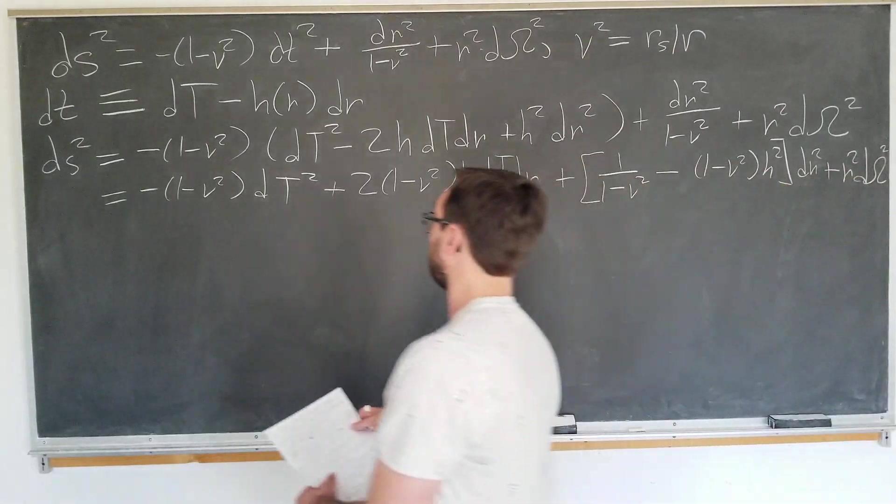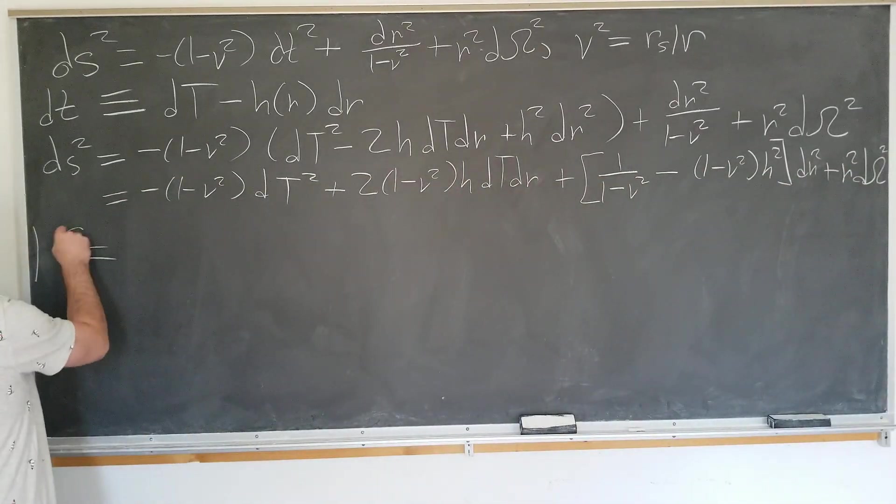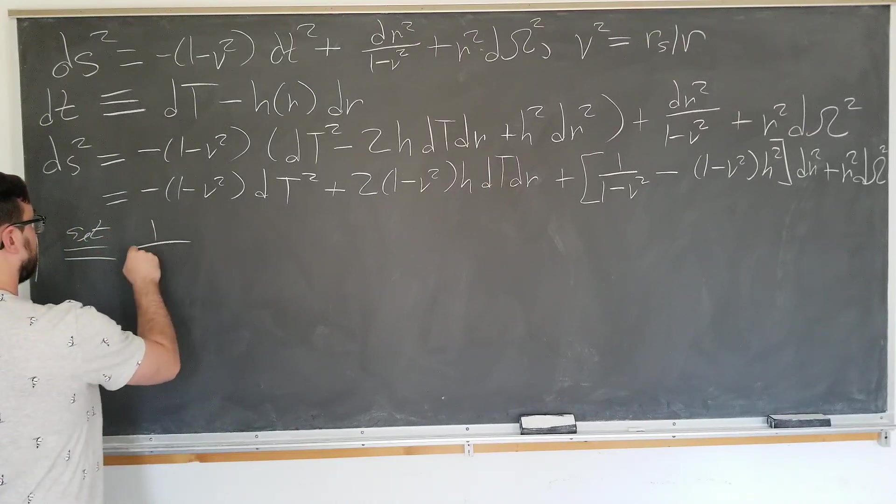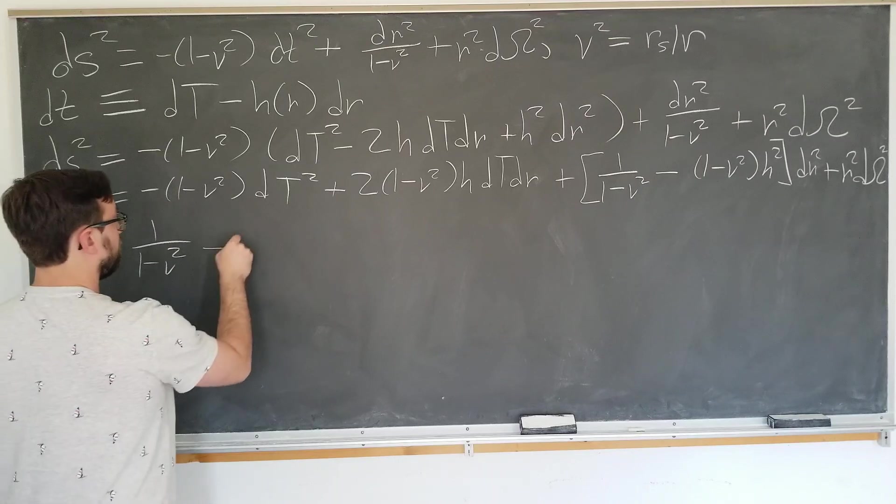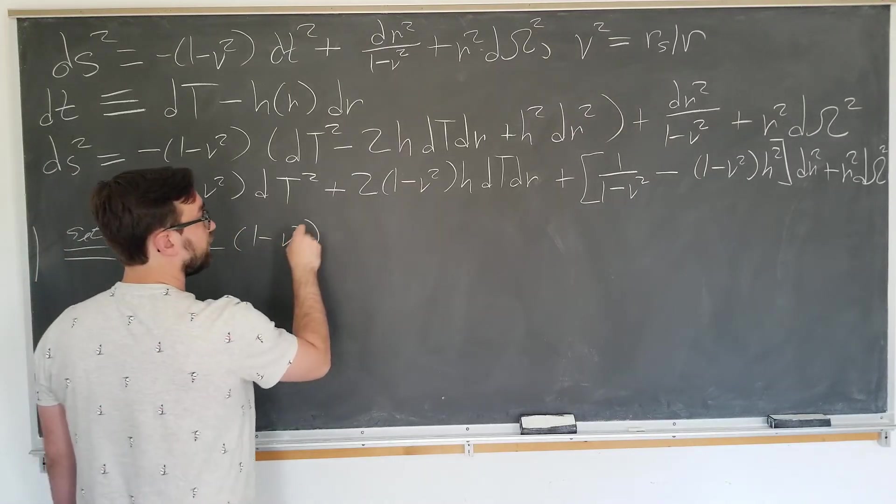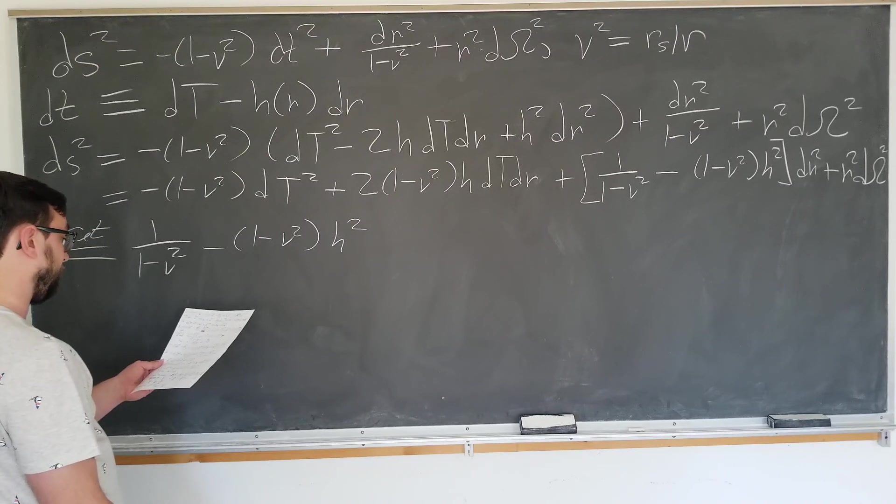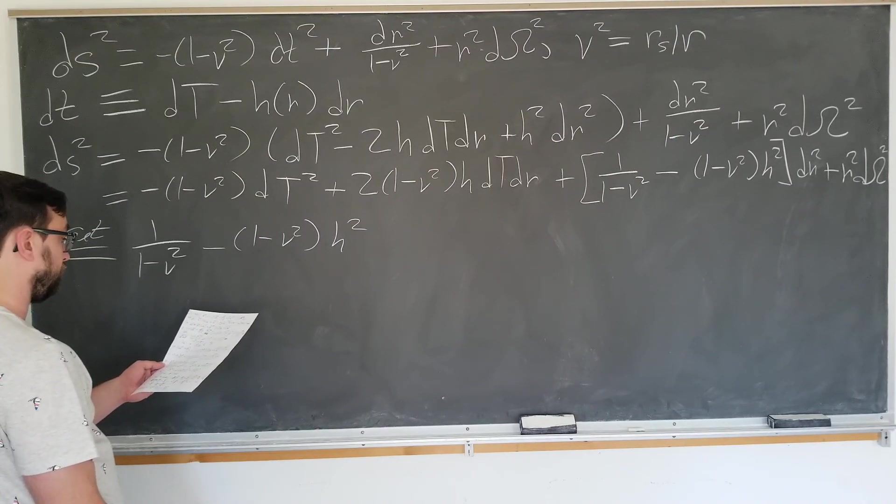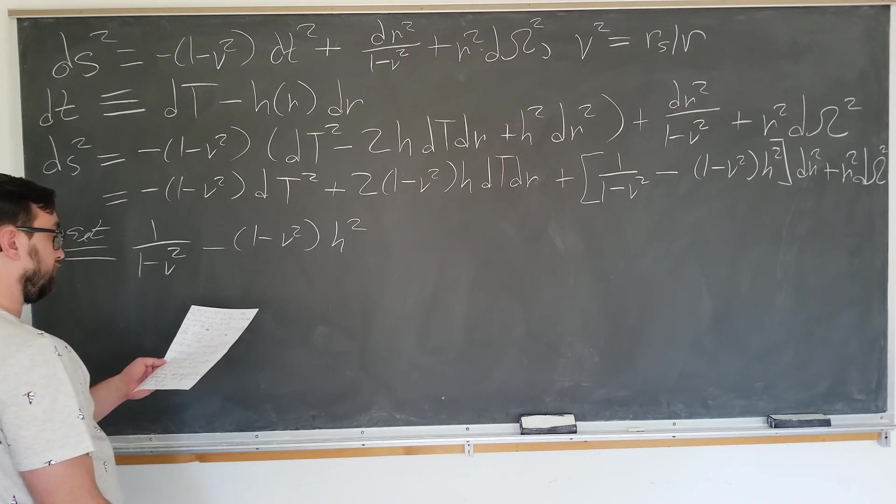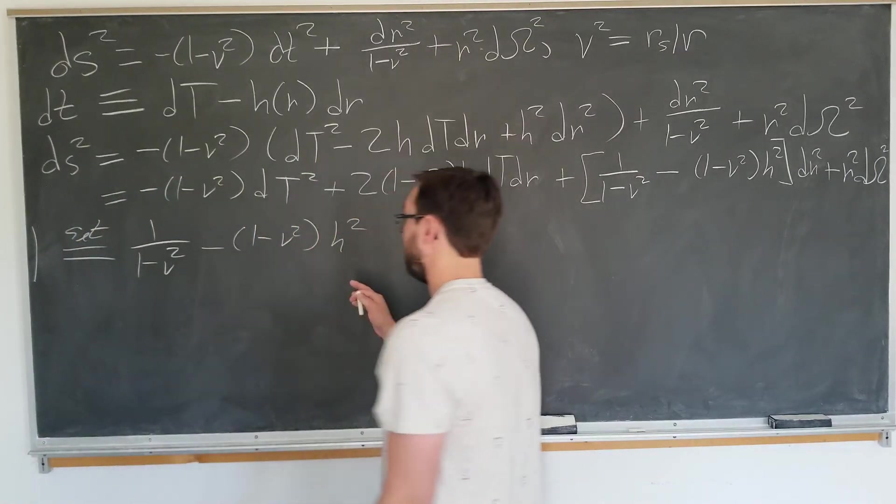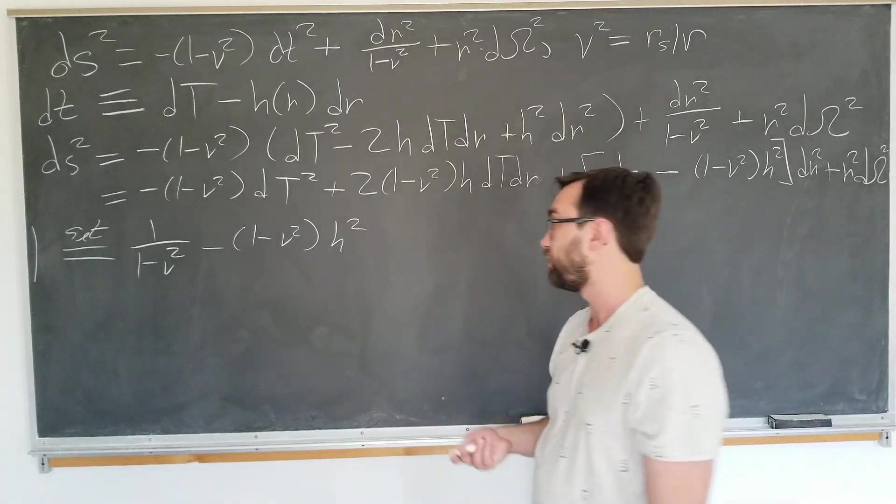So now we're going to let 1 be set equal to our dr squared coefficient: 1 over 1 minus v squared minus 1 minus v squared h squared. From here, we can just solve for h pretty easily.